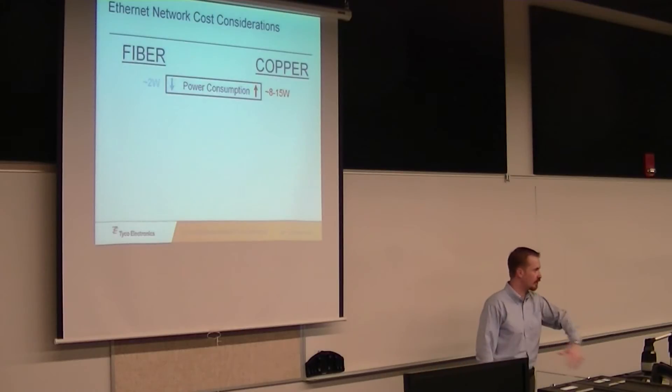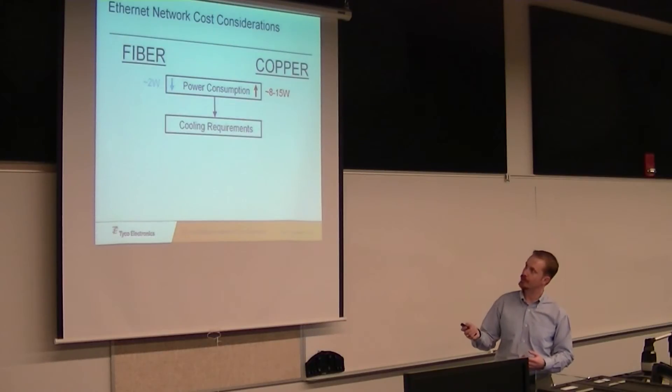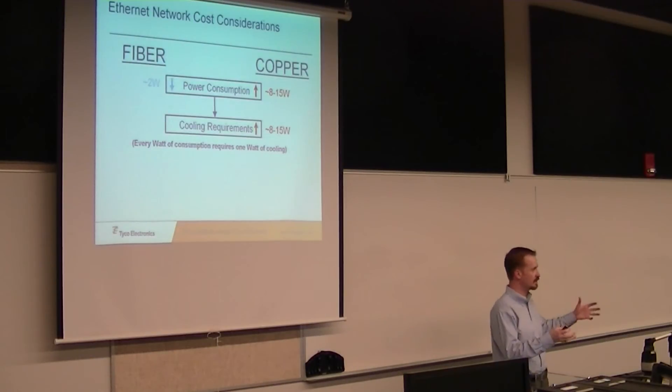In data center stuff, you have a hot aisle and a cold aisle, so you really need to maintain your temperature. But in order to cool things, for every watt of consumption requires one watt of cooling. So we need another 8 to 15 watts of power to run the cooling system to bring that temperature back down from the power consumption that raised the temperature. On fiber, we're down about 2 watts. So between your power consumption and your cooling requirements, your whole energy cost is still less than just the power consumption of copper.